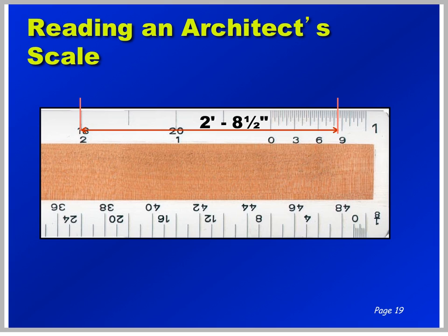What is the smallest tick mark for the 1-inch scale? Well, if it equals an inch from here to here, we have a 1/2 inch, and then we have a 1/4 inch. The answer is 1/4 inch.